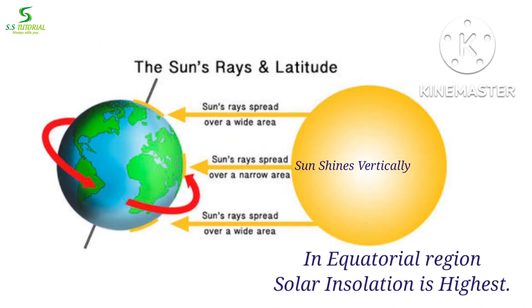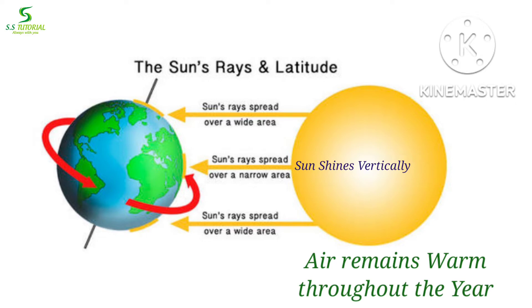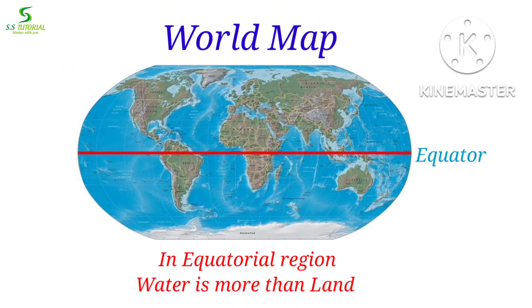In this region solar insolation is highest because the sun shines here perpendicularly or vertically. So air remains warm throughout the year. If you see on the world map, you will find that in this region water is more than land.